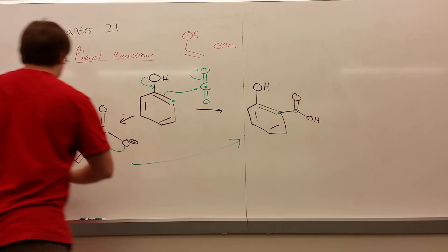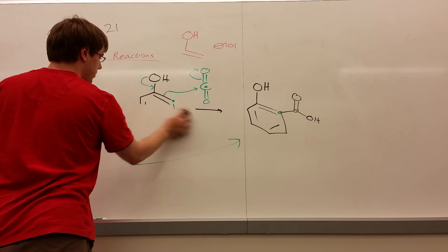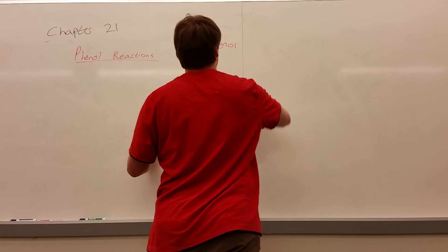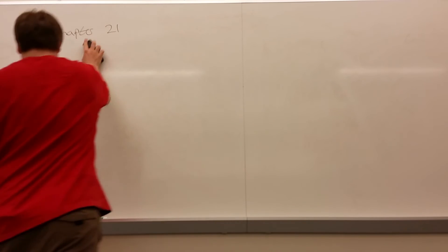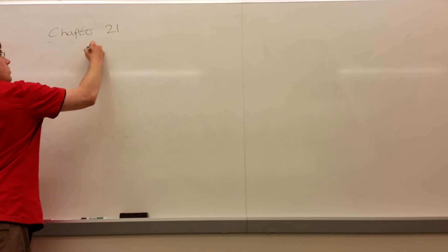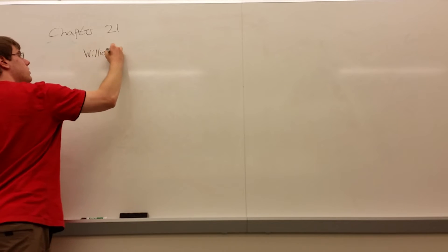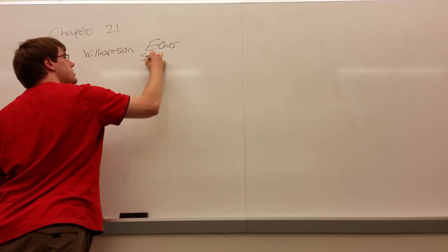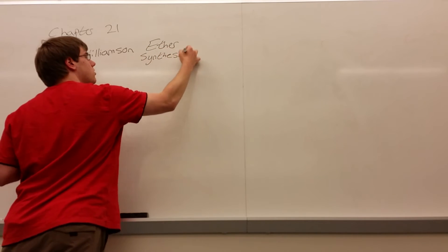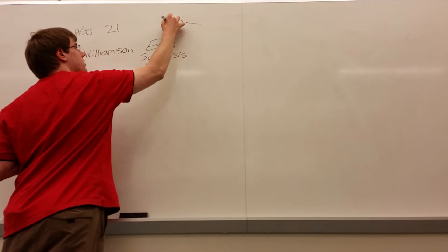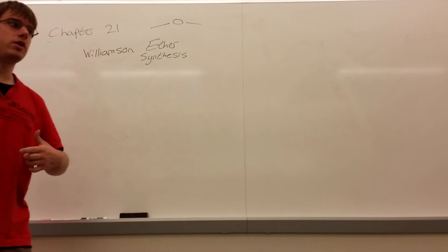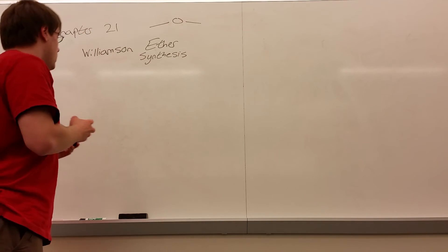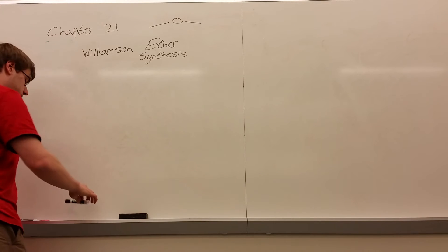The other way is a little more particular, and it kind of has to do with a reaction you actually learned from Orgo 1, and that is in the context of something called the Williamson ether synthesis. First of all, what is an ether? Remember, an ether is any oxygen that has two bonds to a carbon, but it's not a carbonyl. So no C double bond O. Just carbon, oxygen, carbon, single bonds.